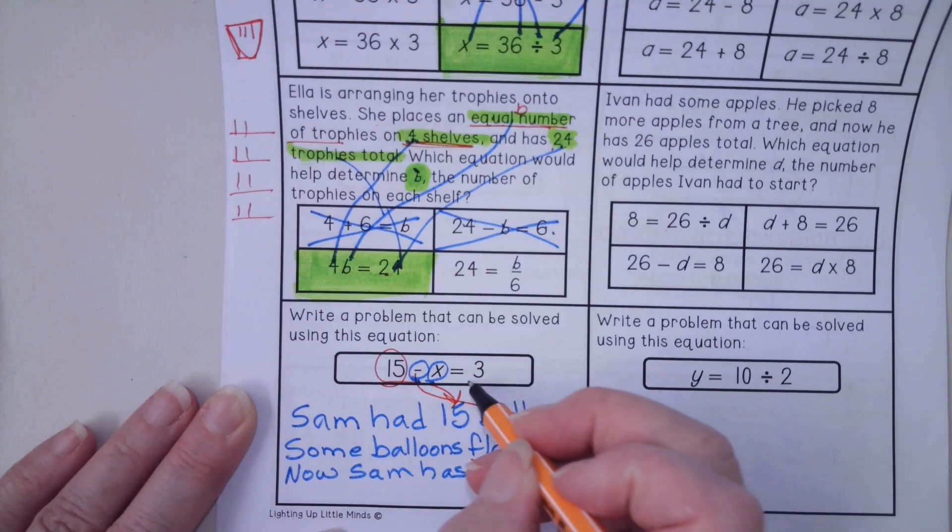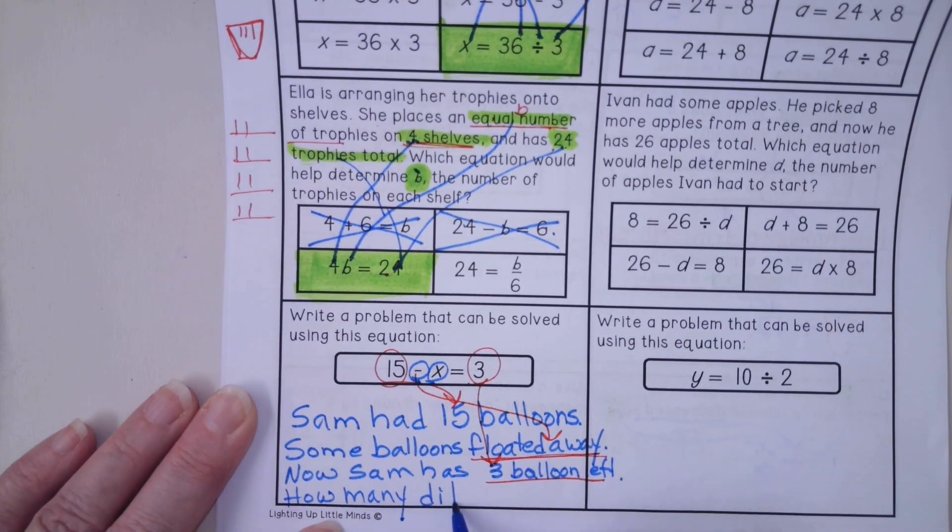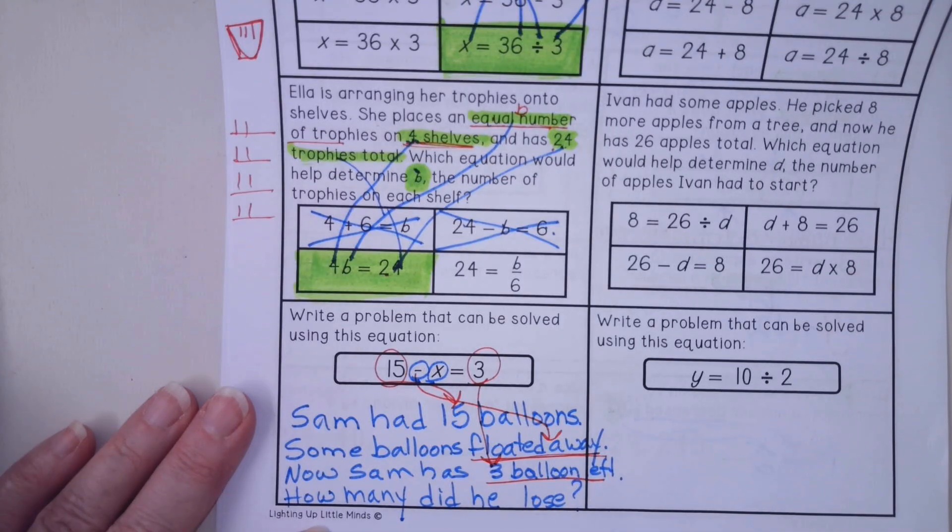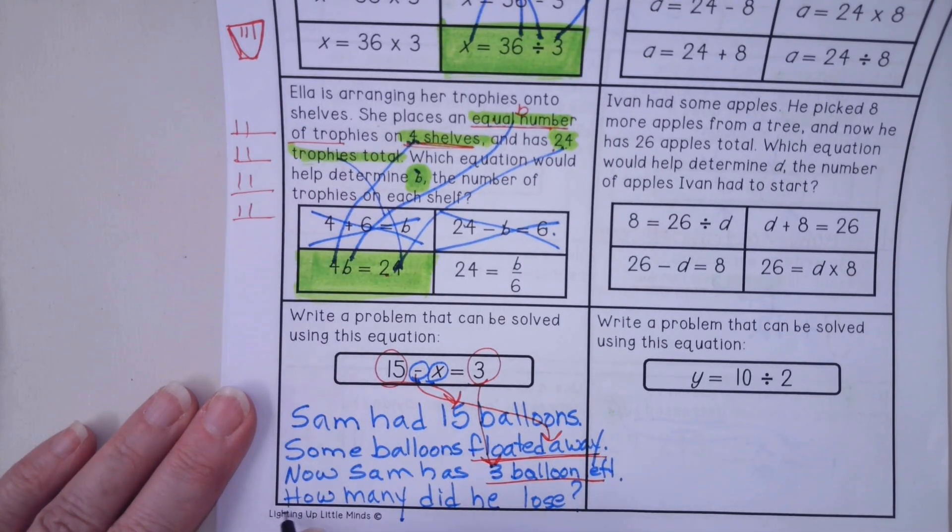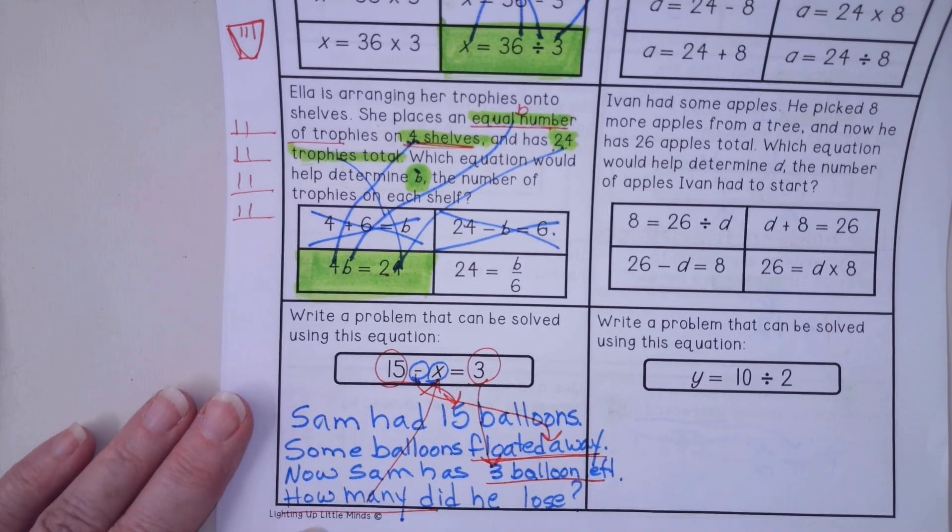Now Sam has three balloons left. That takes care of my equation right here. The three balloons. We have to ask one more component. How many did he lose? You have to have the full thought pattern. And that how many did he lose, that is our variable. That's the X.